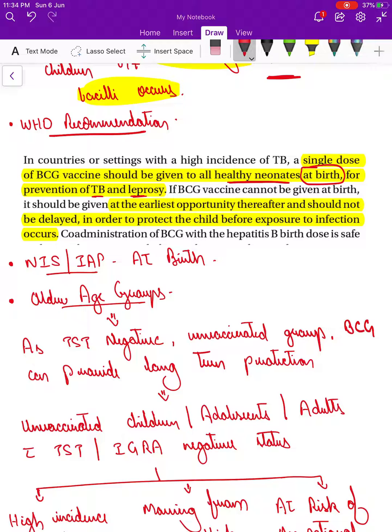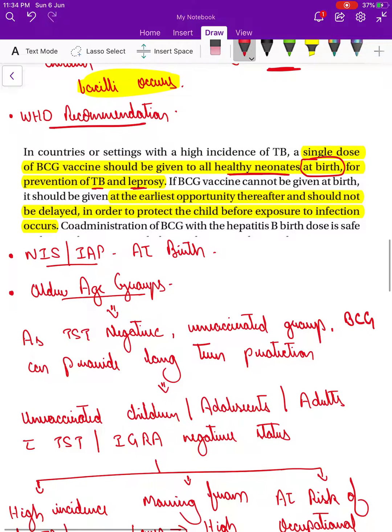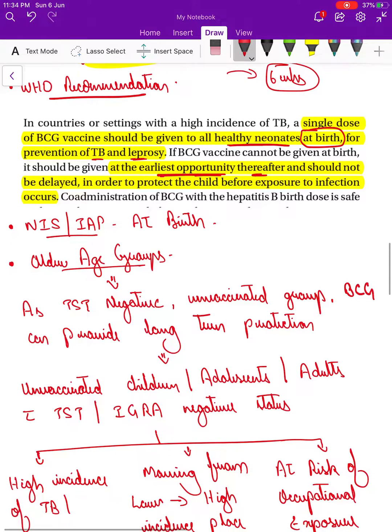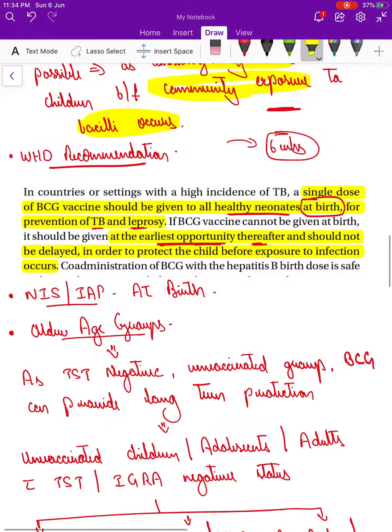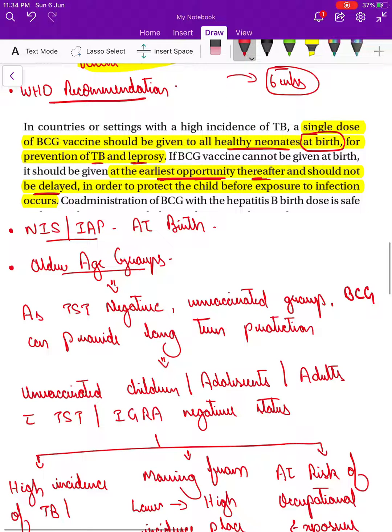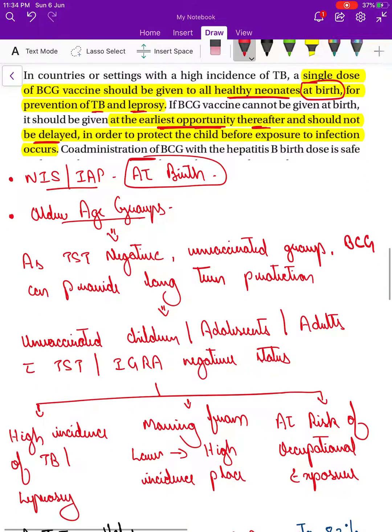If we are not able to give at birth, if the child might have had an NICU stay, then it has to be given at the earliest opportunity thereafter. This is a change from the previous guidelines, which said we can vaccinate the child when it comes for next vaccination at six weeks. The present status has been changed because immunogenicity is better if given before community exposure. It should be given at the earliest opportunity and should not be delayed.